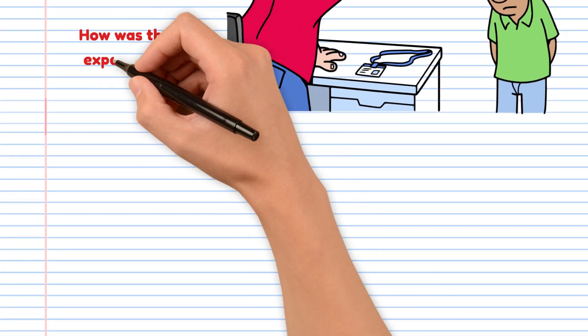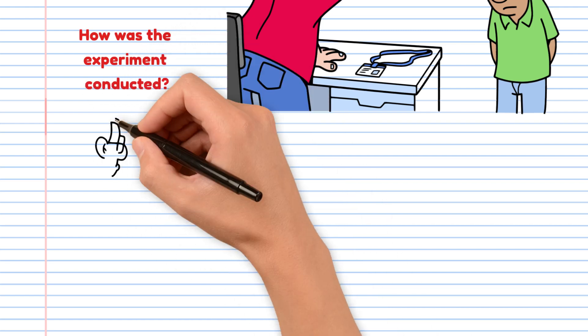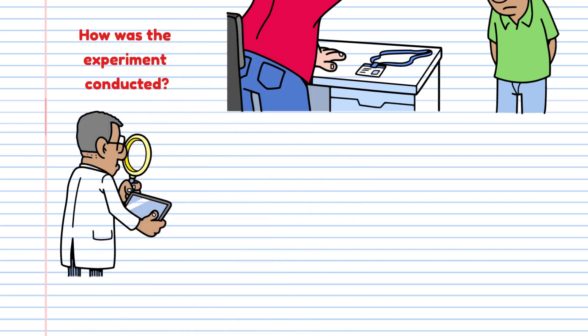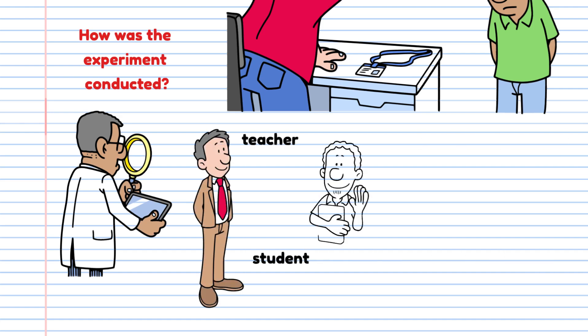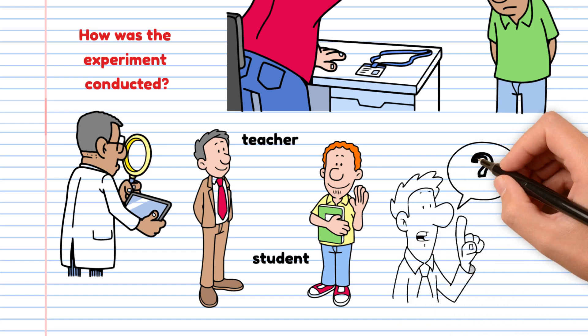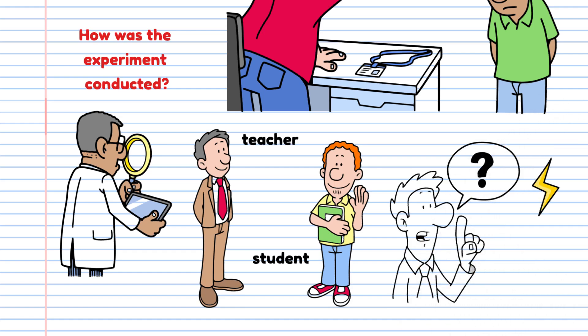How was the experiment conducted? Participants were told they were participating in a study on memory and learning. They were divided into teachers and students, but the students were actors. The teachers were instructed to ask the students questions and administer increasingly strong electric shocks for each wrong answer.